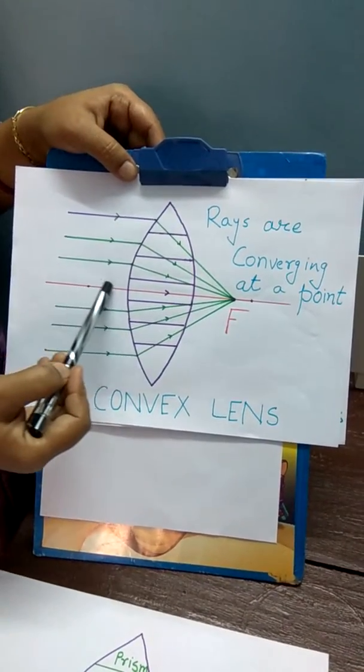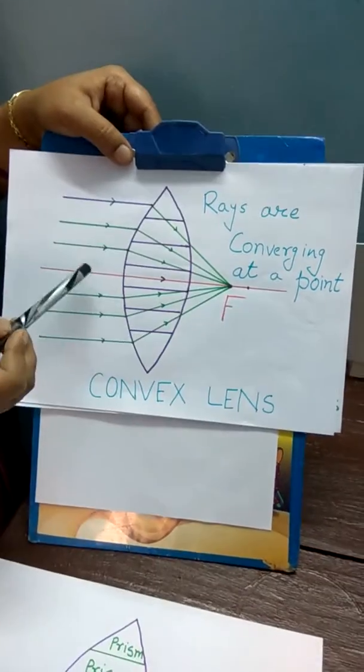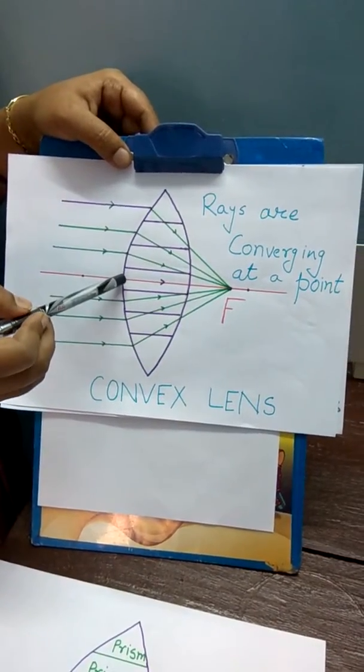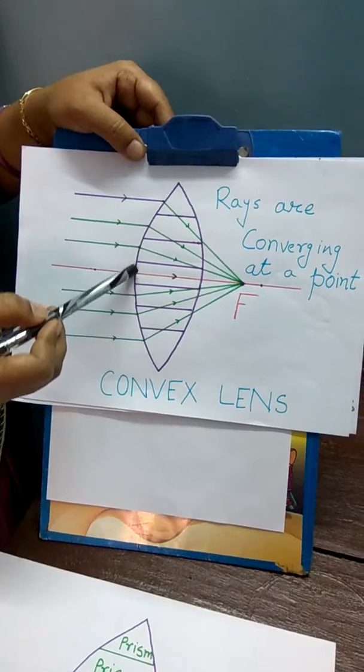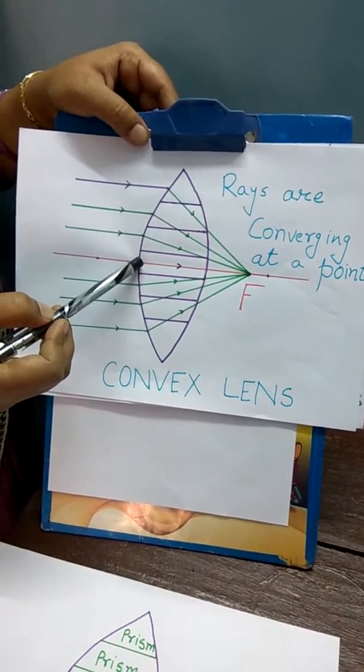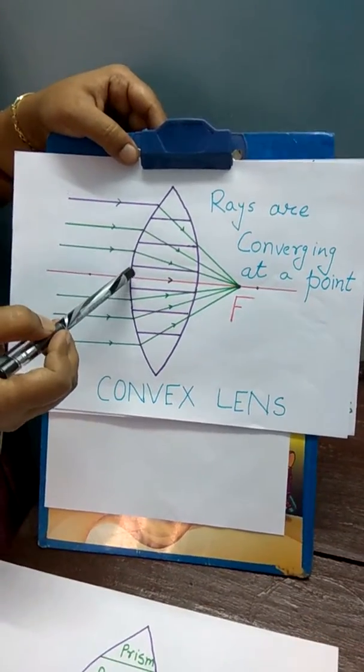There is a ray which is going undeviated through the lens. This happens because the rays are falling at 90 degrees on this surface.